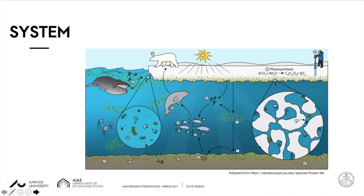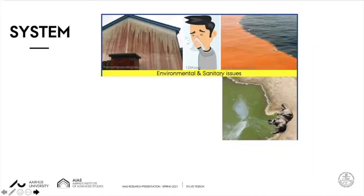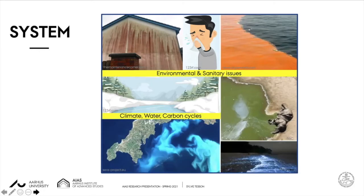These cold-adaptive microalgae can also form a source of potential active bioaerosols once emitted into the atmosphere. Some microalgae can also have a negative impact and be the cause of environmental and sanitary issues, such as the deterioration of building surfaces. They can also be a source of allergens and a source of toxic events. Some microalgae can also play a role in climatic water and carbon cycles.